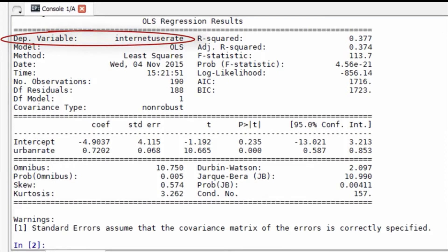Dept variable shows us the name of the response variable. No. observations shows us the number of observations that had valid data on both the response and explanatory variables and were therefore included in the analysis. The F statistic is 113.7 and the p-value is very small, considerably less than our alpha level of 0.05, which tells us that we can reject the null hypothesis and conclude that urban rate is significantly associated with internet use rate.